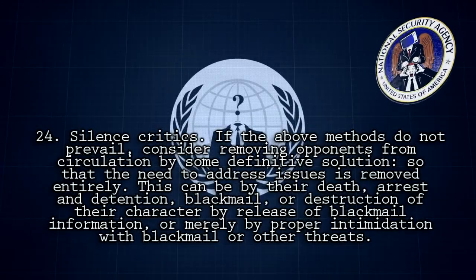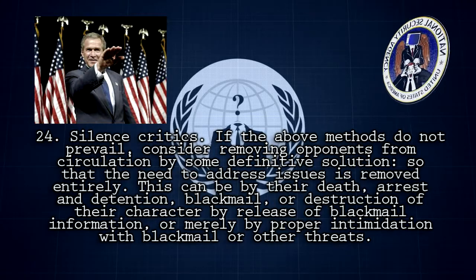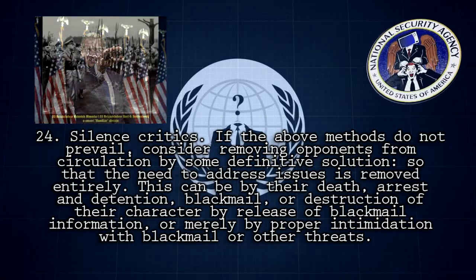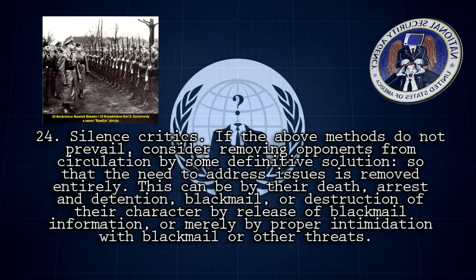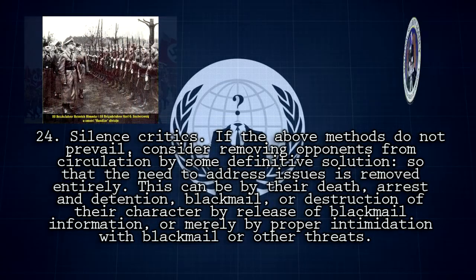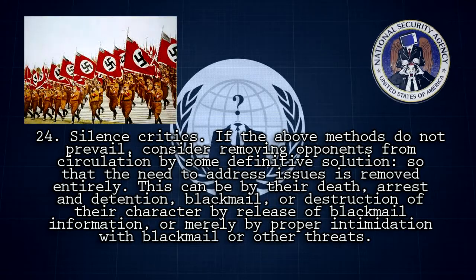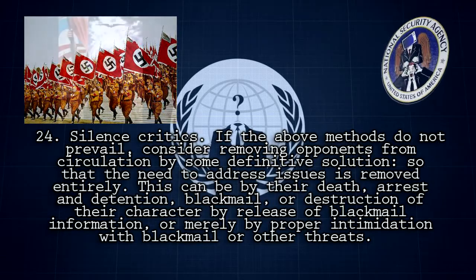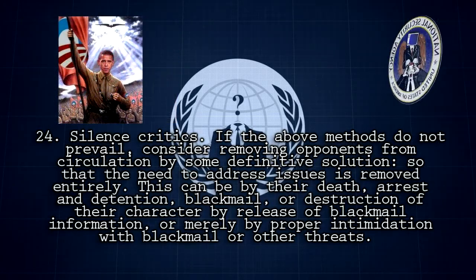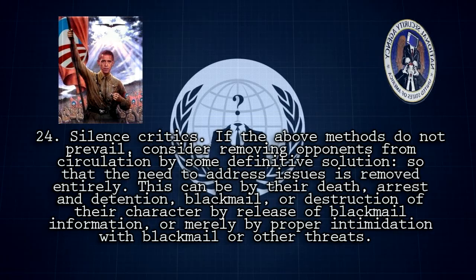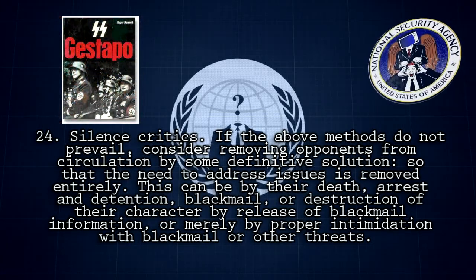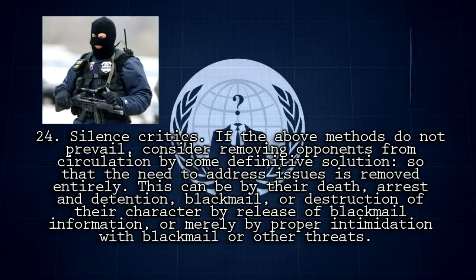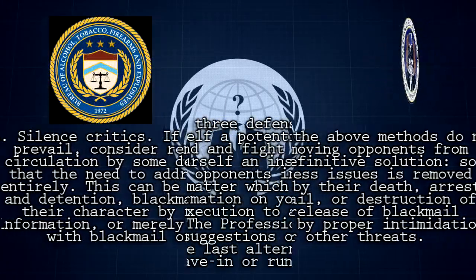Rule 24: Silence Critics. If the above methods do not prevail, consider removing opponents from circulation by some definitive solution so that the need to address issues is removed entirely. This can be by their death, arrest and detention, blackmail, or destruction of their character by release of blackmail information, or merely by intimidation with blackmail or other threats. Example: As experienced by certain proponents of friendly fire theories with respect to Flight 800, FBI agents were sent to intimidate and threaten that if they persisted, they would be subject to charges of aiding and abetting Iranian terrorists, failing to register as a foreign agent, or any other trumped-up charges. If this doesn't work, you can always plant drugs and bust them.